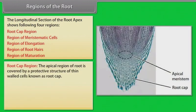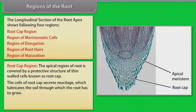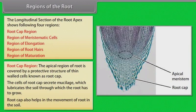Root cap region: the apical region of the root is covered by a protective structure of thin-walled cells known as the root cap. The cells of the root cap secrete mucilage which lubricates the soil through which the root has to grow. The root cap also helps in the movement of the root in the soil.